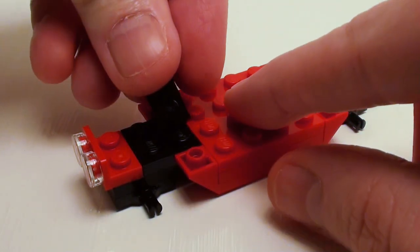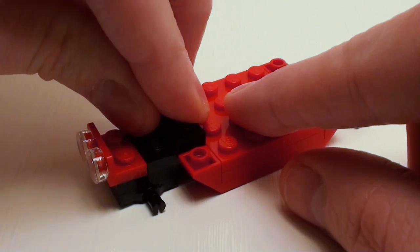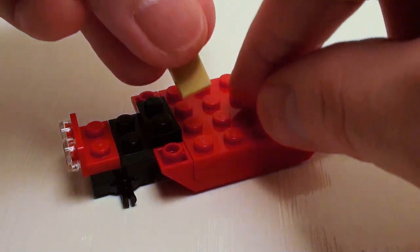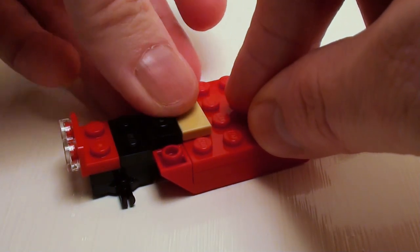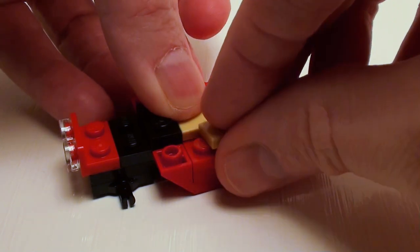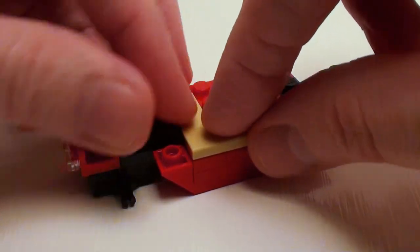We'll skip a set of studs and set down a 1 by 2 plate right here. Let's take several 1 by 2 flat tiles. This is going to be the base of our seat. I'm just going to set these here like so.